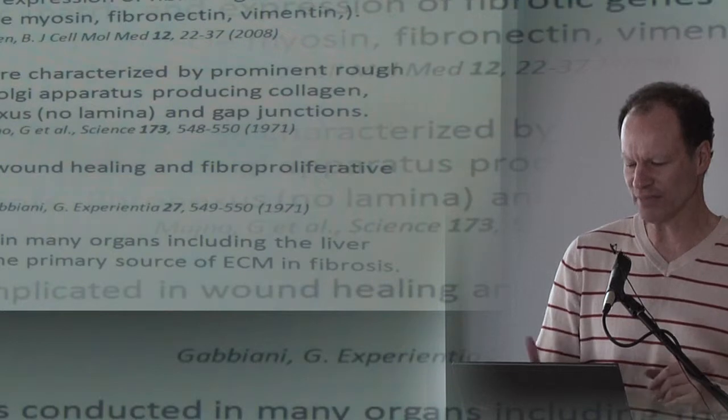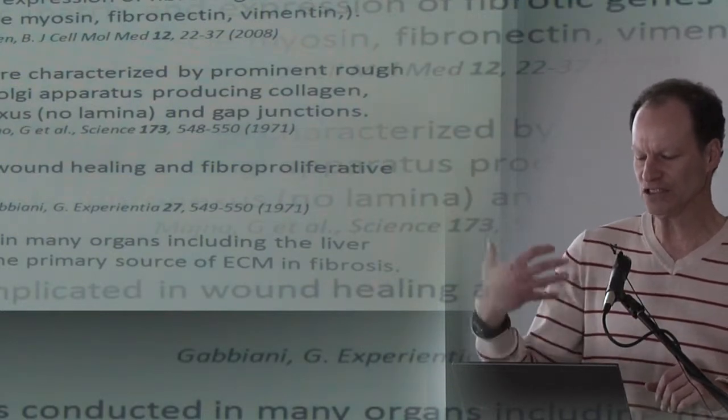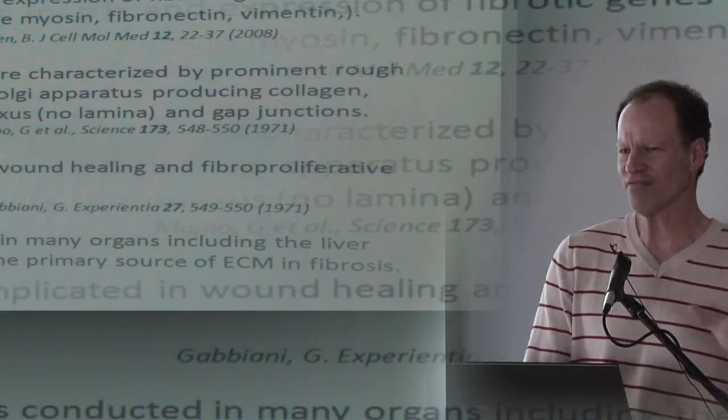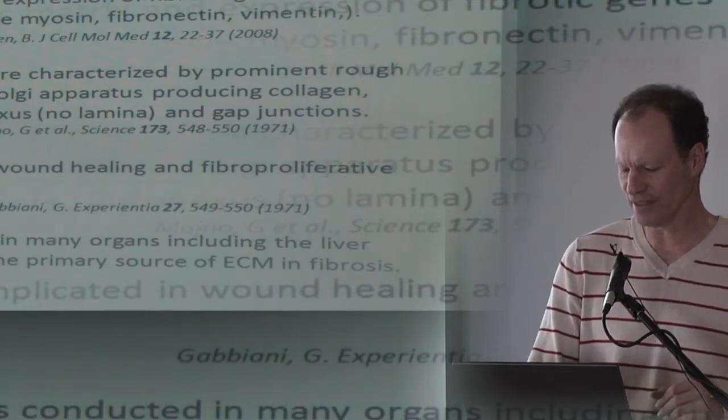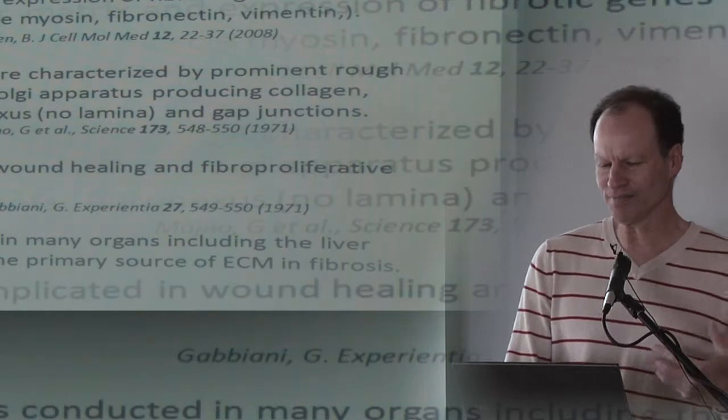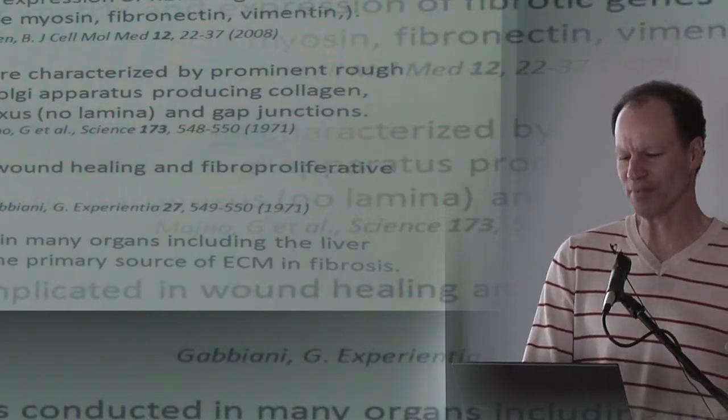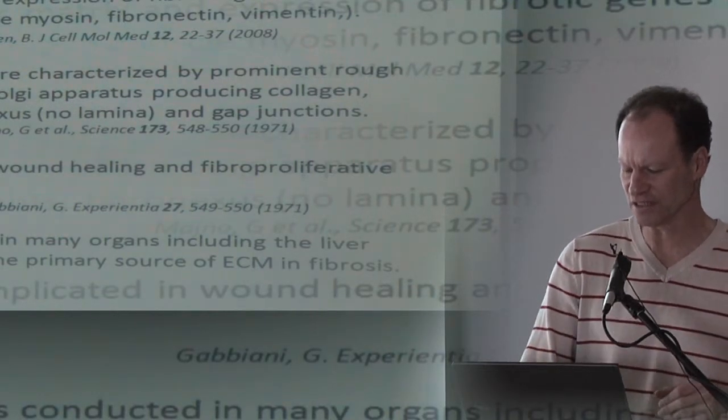Based on all that and some data I will show you, it seems like the myofibroblast is the source for the extracellular matrix in fibrosis and certainly liver fibrosis. We can't find any cells that are not myofibroblasts that are laying down fibroscarring.